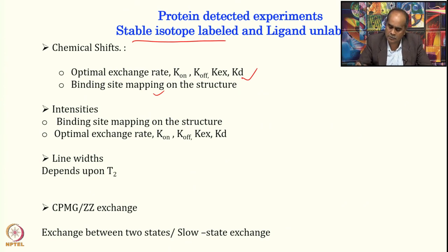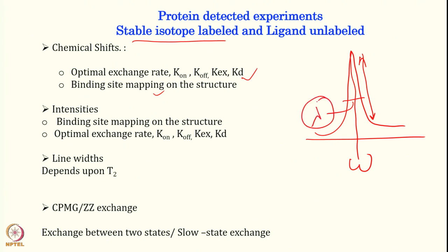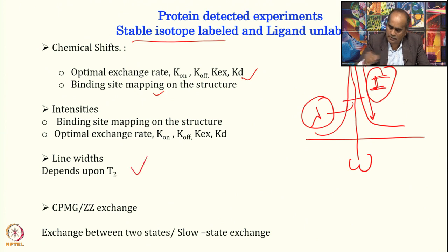The other parameter we can monitor — recalling from the last class — includes chemical shift, intensity, and line width. These three parameters are easily determined. Chemical shift tells about the chemical environment; intensity tells about the population participating in binding and can also tell you about binding site mapping. From these, one can get K on, K off, K exchange, and KD. The third parameter is line width, which depends upon T2, the transverse relaxation rate. If the molecule becomes bigger, line width changes.